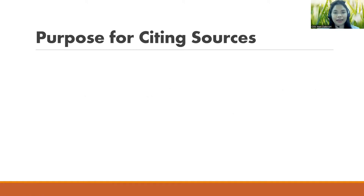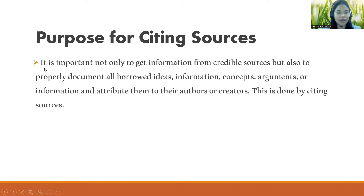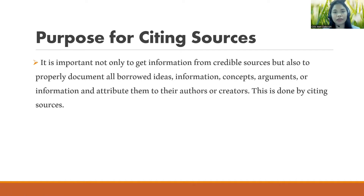In research, this is very important. Why are we citing sources? It is important not only to get information from credible sources, but also to properly document all borrowed ideas, concepts, arguments, and attribute them to the owners or creators. This is done by citing sources, because the sources we are using are just borrowed ideas. That is why we paraphrase to avoid plagiarism.